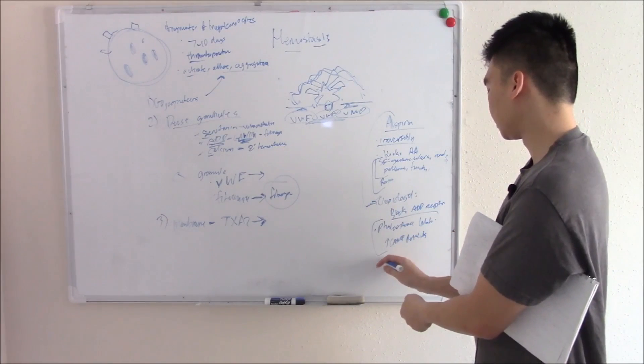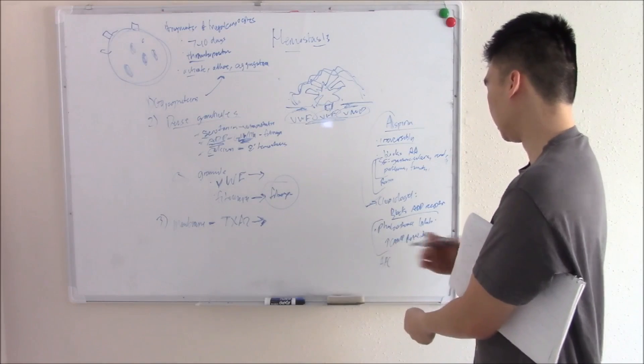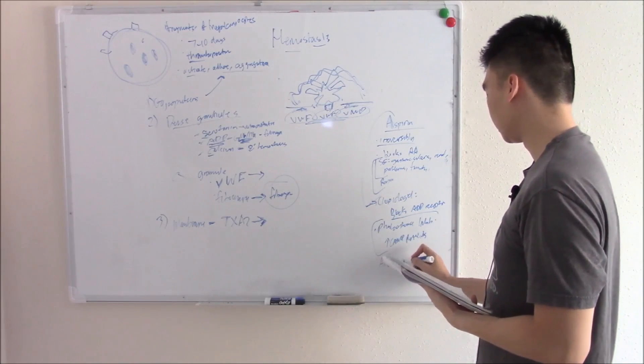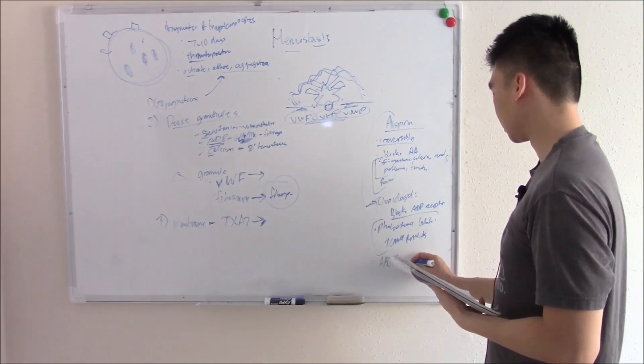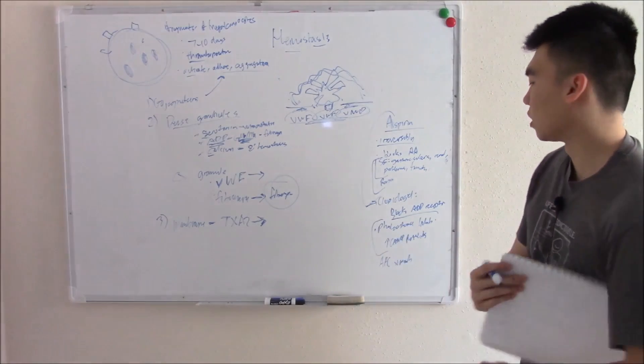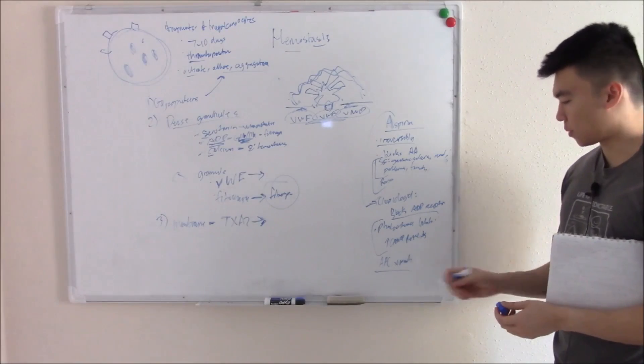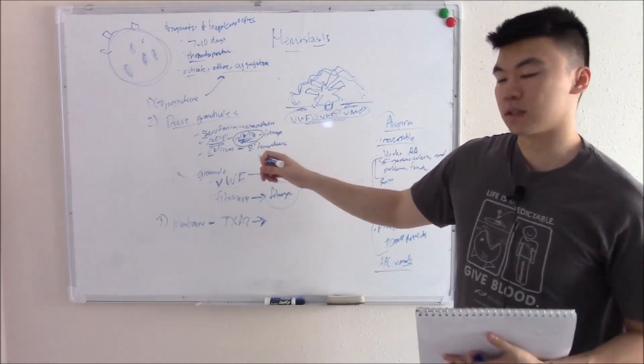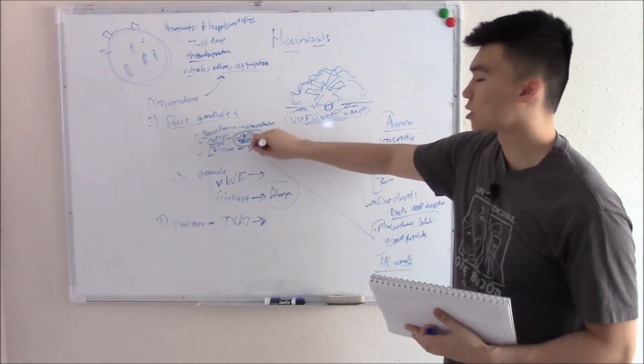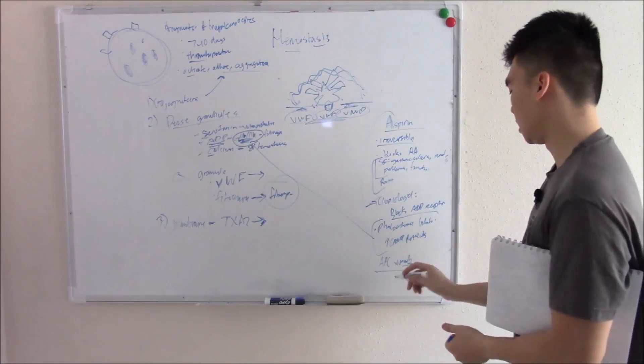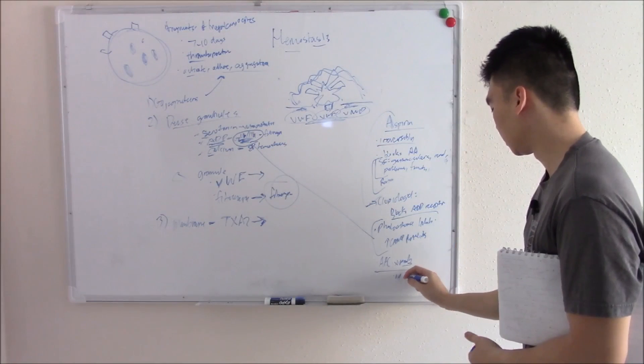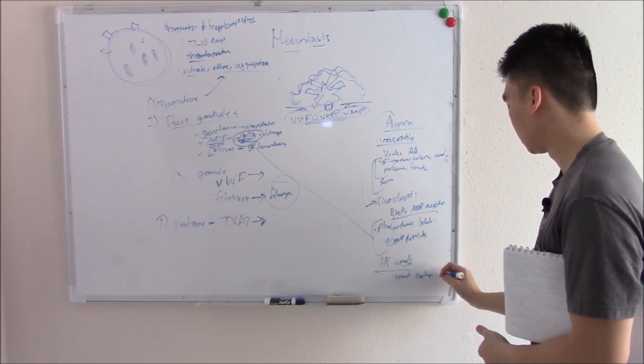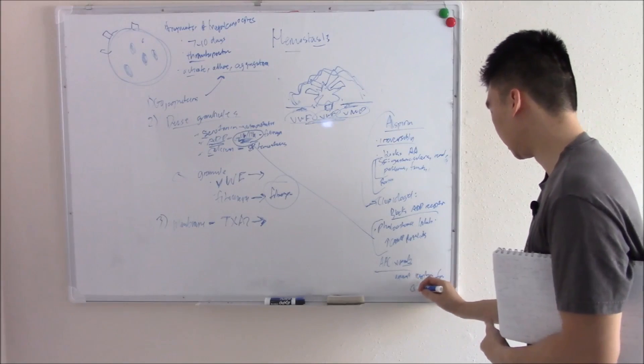Last but not least, abciximab. I just like to write it that way because it's the easiest way for me to remember. Abciximab is a monoclonal antibody, that's why it's called a mab, against your 2b3a receptor, against the receptor itself for GP2b3a.